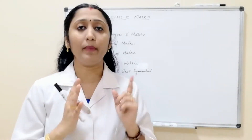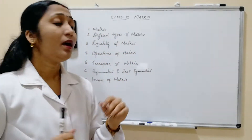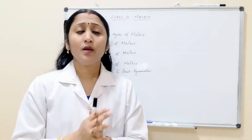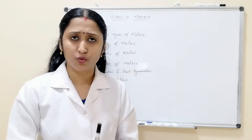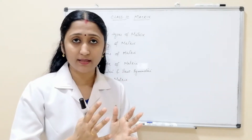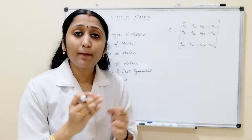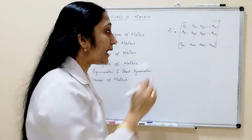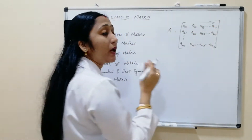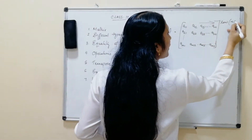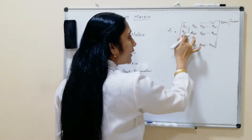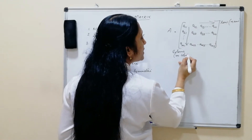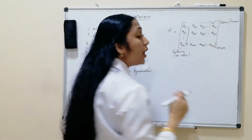Let us start today's topic: matrix. Before going in depth, we have to know what is meant by a matrix. A matrix is a rectangular arrangement of elements — that means rows and columns. For example, matrix A has elements a11, a12, a13, up to a1n. This horizontal line is called rows, so we have n rows, and this vertical line a11, a21, am1 is called columns, so we have m columns.